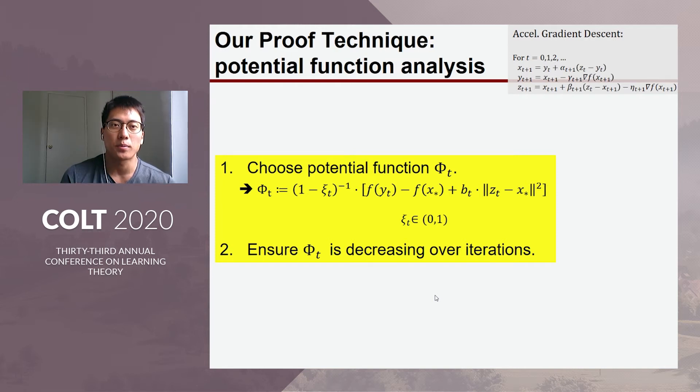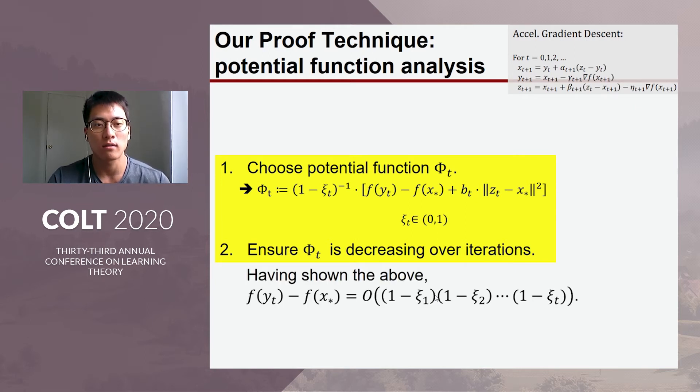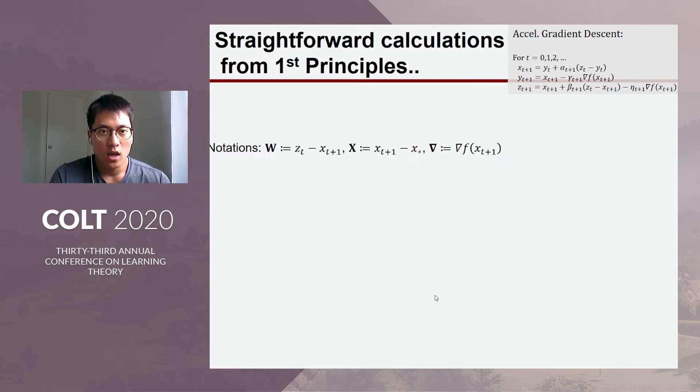Okay, so let me begin with the first part, simplification part. Our analysis is based on potential function analysis. So, roughly speaking, it relies on the following two steps. Firstly, we choose a potential function and if we can show that this potential function decreases over iterations, it follows that the following convergence rate, which is a product of one minus c. So, this is linear convergence rate.